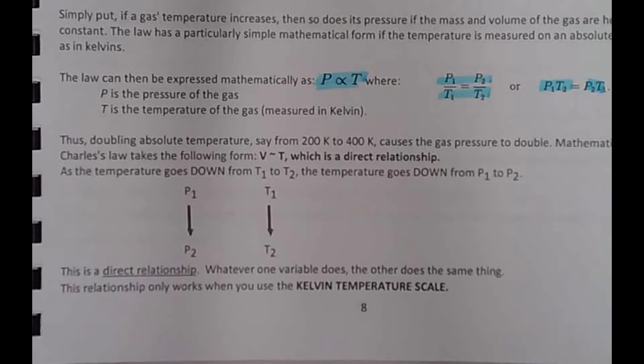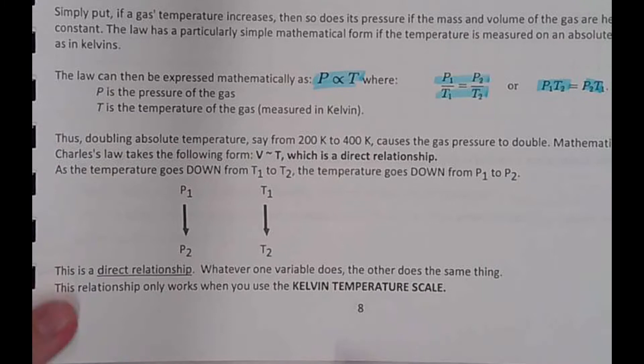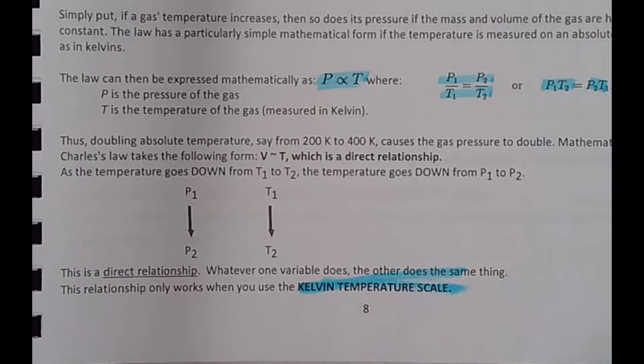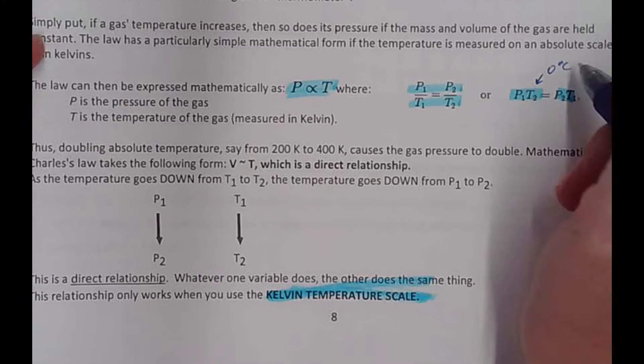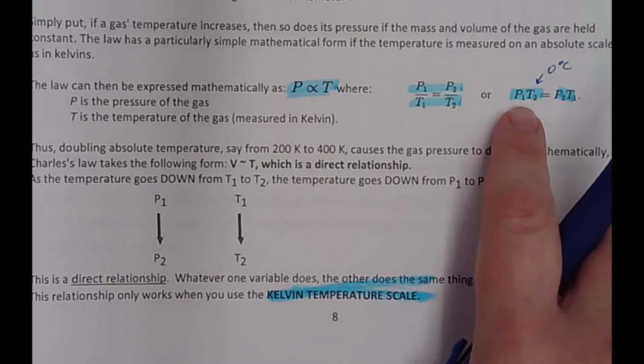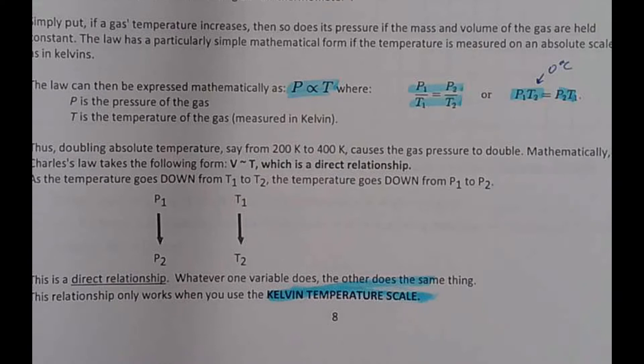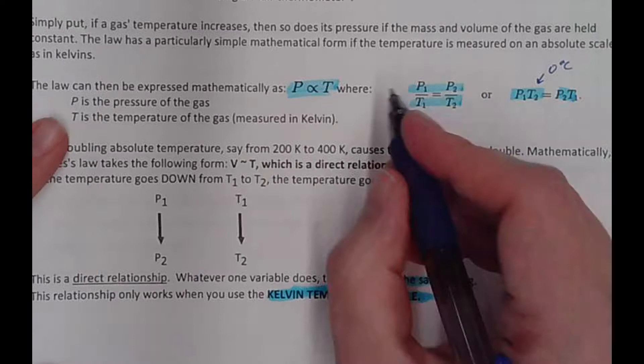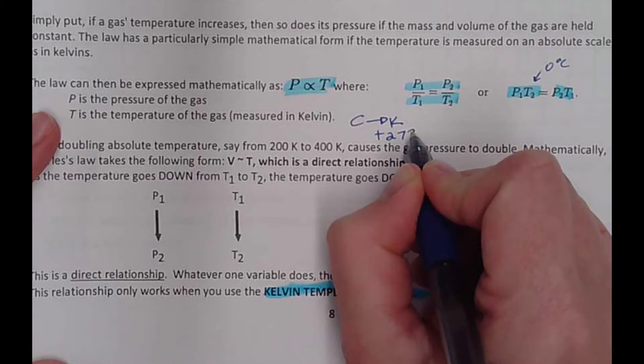One important thing to watch out for: you must use the Kelvin temperature scale. If I plug in zero degrees Celsius — standard temperature — anything times zero is zero, which would indicate pressure is zero. But that's not true; when it's freezing outside you can still breathe. So we have to be in Kelvin. To convert from Celsius to Kelvin, simply add 273.